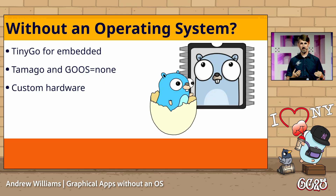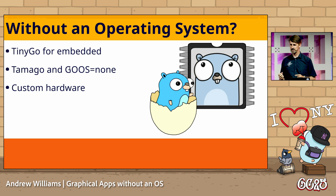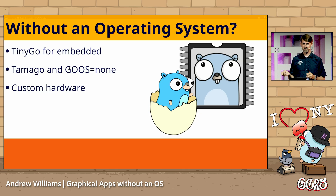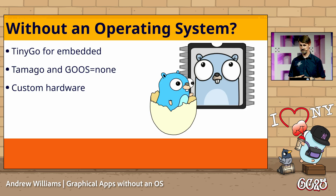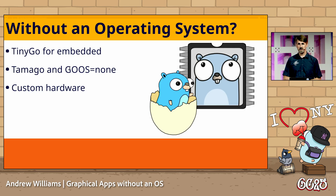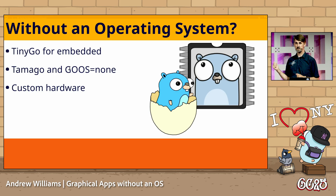But today I wanted to talk about working without an operating system. That might be a little bit of a bizarre concept — why do you want apps without an OS? We've heard, and hopefully people got to the hack lab yesterday for TinyGo, an excellent way to use Go to build software that's going to run in embedded devices. There's other emerging technologies as well — Tamago is one of them. And there's also an ongoing discussion about a Go OS value of 'none', where you're not actually deploying onto a known platform at all — bare metal stuff — so we can deploy onto custom hardware and all sorts of esoteric devices.